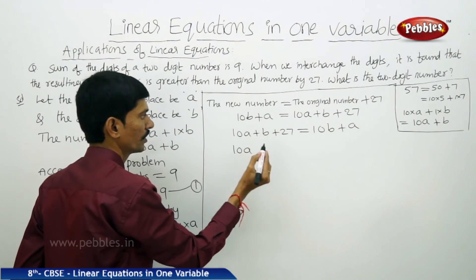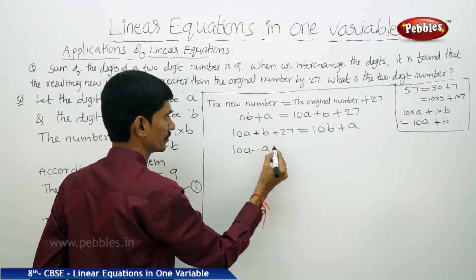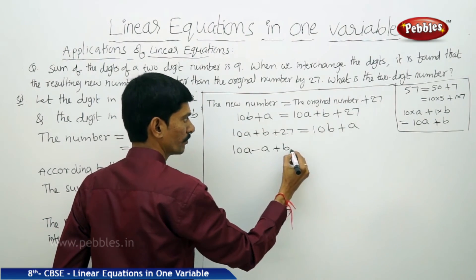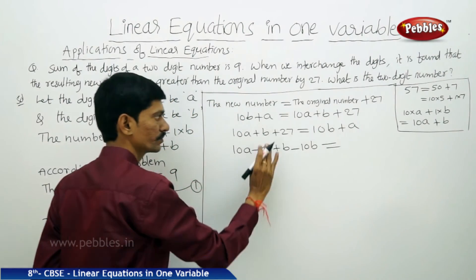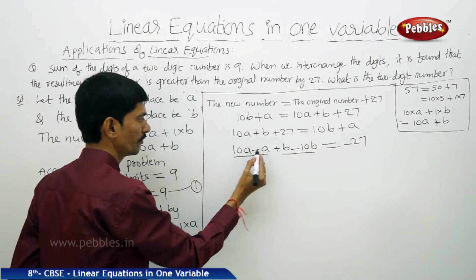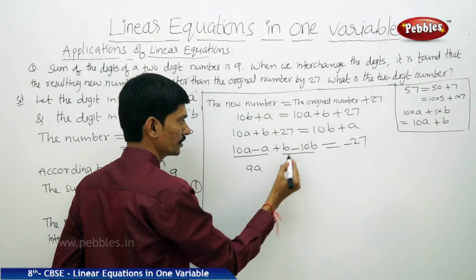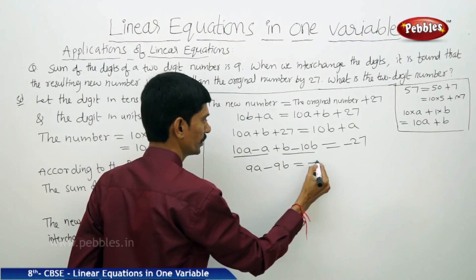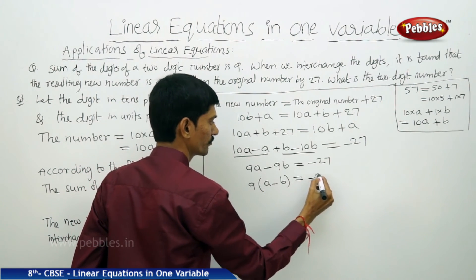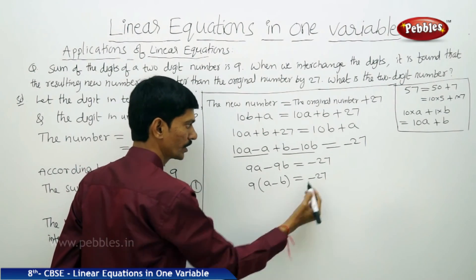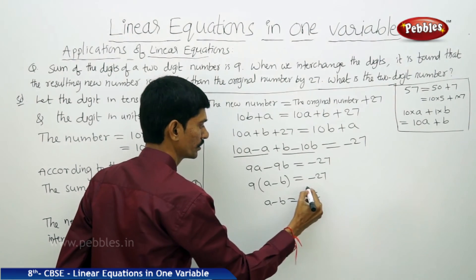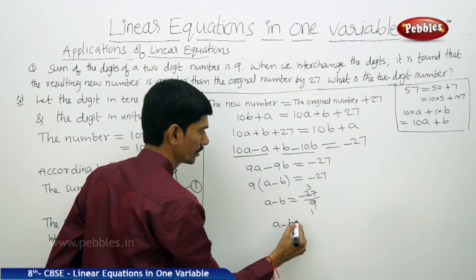Transposing: 10a minus a to LHS and 10b minus b. So 9a minus 9b plus 27 equals 0, giving 9a minus 9b equals minus 27. Dividing by 9: a minus b equals minus 3. This is equation 2.